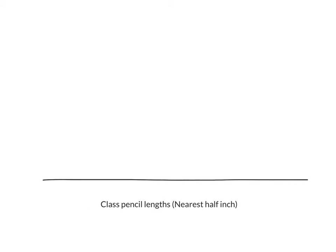This time we're making a brand new line plot, so again we need a number line at the bottom. We also need a title — the title is the same; we're still measuring our class pencil lengths. But this time our units are different. Is it still to the nearest inch? No. So in parentheses, write that it's the nearest half inch. In our previous line plot, we found out that to the nearest whole inch, our range was three inches to seven inches. So do I need to make my number line go from zero to 12 again?